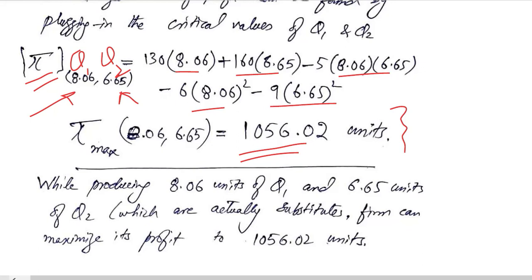Finally, we can summarize this by saying that if the firm produces 8.06 units of Q1 and 6.65 units of Q2, which are substitutes, the profit will be maximized at 1056.02 units.